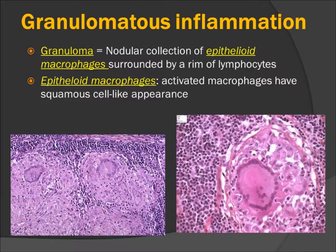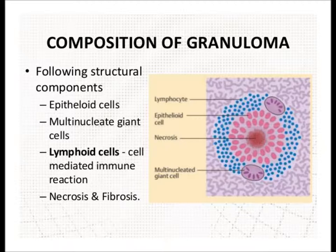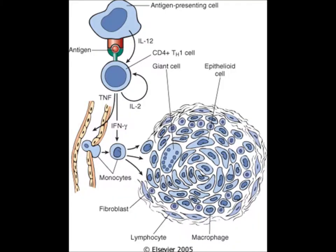Granuloma is composed of a collection of epithelioid cells. Epithelioid cells are activated macrophages. They are surrounded by lymphocytes and they may form giant cells — these are Langhans-type giant cells, which have peripheral nuclei. The composition of granuloma includes epithelioid cells, multinucleated giant cells, and collar lymphocytes. The center may have caseation necrosis, and in the outer area there may be fibrosis. There are antigen presenting cells that present antigen to the CD4 T-helper type 1 cells.